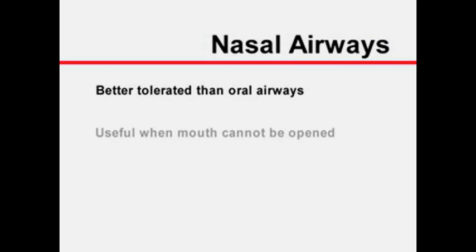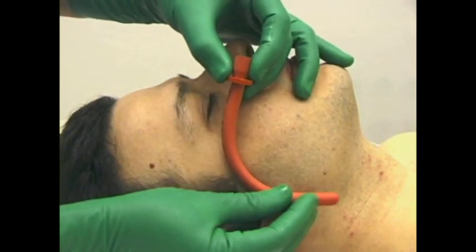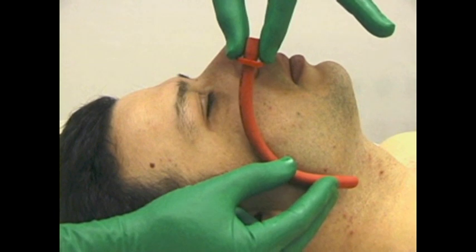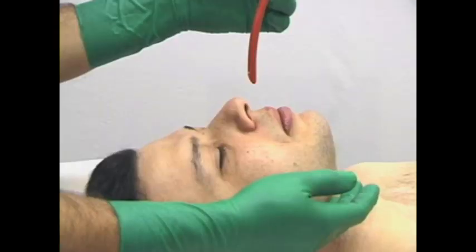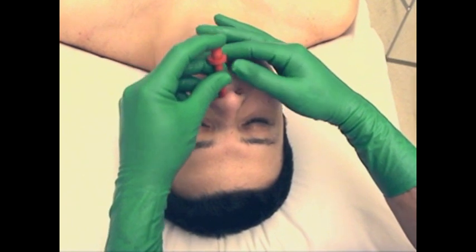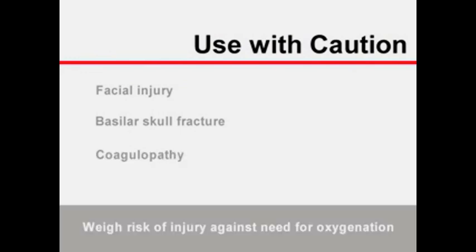In general, nasopharyngeal airways are better tolerated than oral airways when airway reflexes are present. They are particularly useful when the mouth cannot be opened. The simplest method of estimating their appropriate length is by correlating it with the external anatomy of the face and neck and taking into consideration the patient's height. Nasopharyngeal airways should be thoroughly lubricated and advanced perpendicular to the face and parallel to the floor of the nose, not towards the roof of the nose. They must be used with extreme caution in patients with facial injuries, basilar skull fractures, and coagulopathy, weighing the risk of further injury and bleeding against the need for oxygenation.